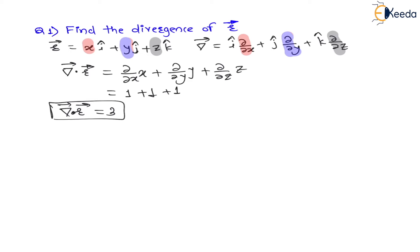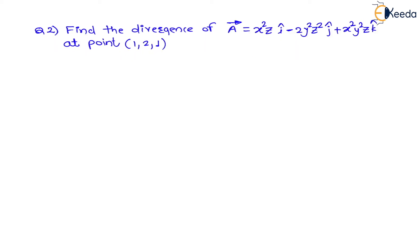Now the second question: find the divergence of vector a at point (1, 2, 1). They have given a vector field — vector a in terms of x, y, z — so it is a three-dimensional vector field. That is why they have given the 3D point x=1, y=2, z=1, and at this point we have to find the divergence.